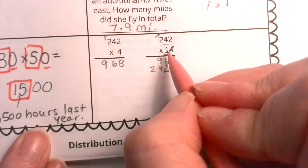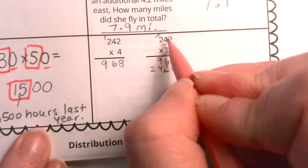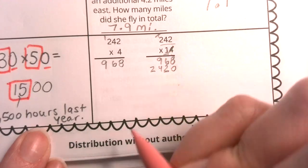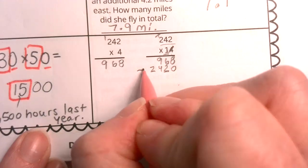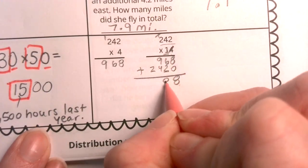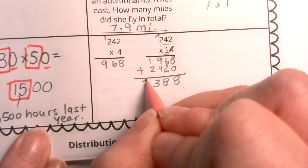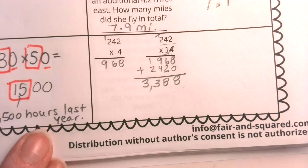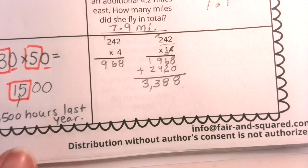Now I have two partial products. We're going to add these together. When we add these together, we get this, 3,388 as our answer for our Tuesday column of week.